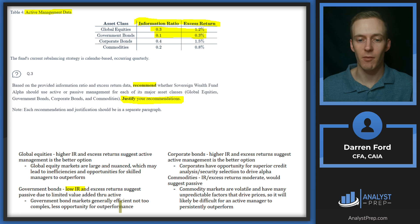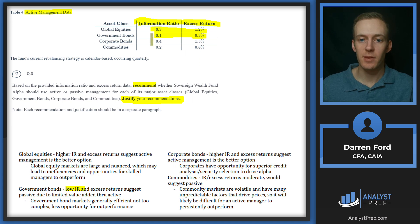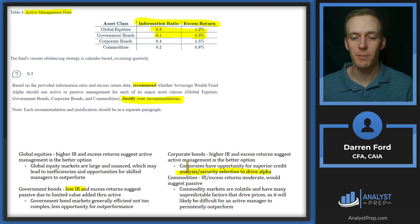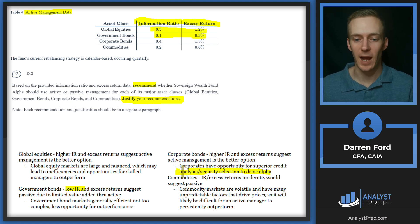Justifying passive for government bonds further: government bond markets are generally efficient and not too complex, leaving less opportunity for outperformance. A government bond is essentially a government bond; if you're going to outperform here, you'd need to take on duration risk or something similar. For corporate bonds, comparing to equities, we have an even higher information ratio and excess return. Higher IR and excess returns suggest active management. Corporates have opportunity for superior credit analysis and security selection to drive alpha — it's a large market with many different credits and issuers, and managers who can identify the better companies and avoid the bad ones can do well over time.